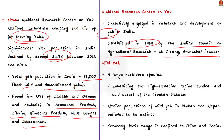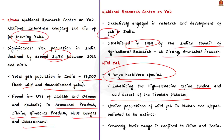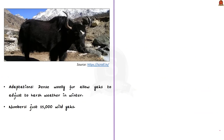Wild yaks are large herbivore species found in high elevation places like alpine tundra and the cold desert of the Tibetan plateau. Previously, wild yak populations were found in Bhutan, Nepal, India, and China, but now they are believed to be extinct in Bhutan and Nepal and mainly confined to China and India. Wild yaks have a dense woolly fur coat that helps them adjust to harsh weather conditions, enabling survival even in negative winter temperatures. Fewer than 15,000 wild yaks remain in the world. Most are found extensively on the Qinghai-Tibetan Plateau, usually in alpine and subalpine regions at altitudes of 2,000 to 5,000 meters.